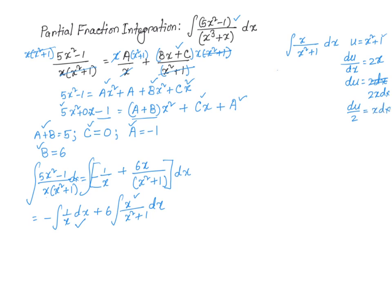Now if I do that substitution here, I'm going to get du over 2 over u, right? So that is going to be 1 half du over u integral, which is nothing but 1 half ln of absolute value of u. That is the same as 1 half ln of absolute value of x squared plus 1. All right?